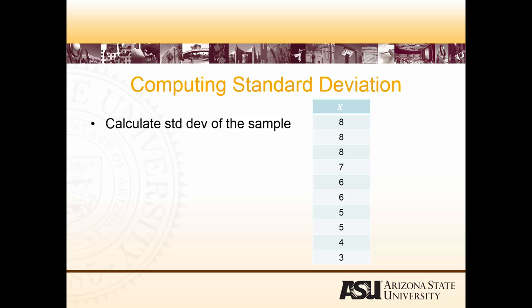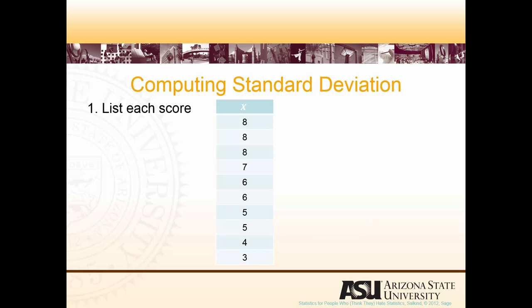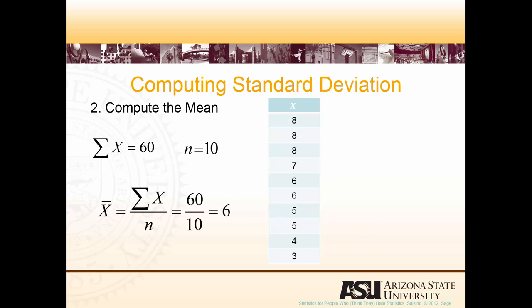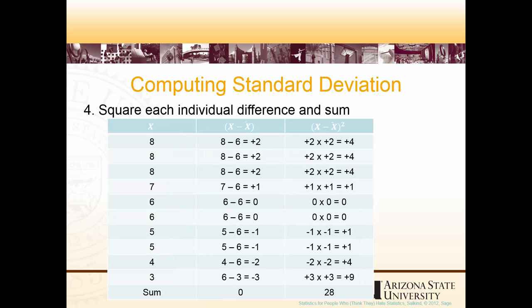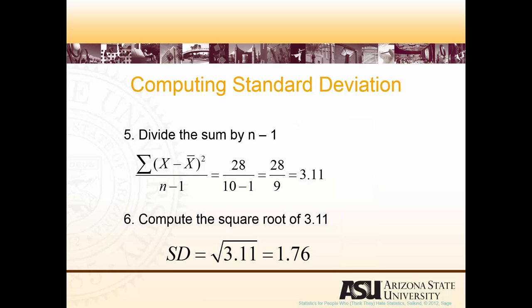So we can calculate the standard deviation of this sample. First we list all the scores, compute the mean as shown here. We subtract the mean from each score and sum all those up and get zero — which is why we have to square them before we sum them up. Here we square them, sum them up, and reach an answer of 28. We use 28 to complete the standard deviation formula and find that the standard deviation of that data set was 1.76.